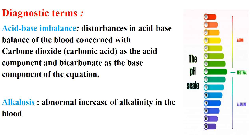Diagnostic terms: acid-base imbalance refers to a disturbance in the acid-base balance of the blood, concerned with carbon dioxide as the acid component and bicarbonate as the base component. The pH scale is used to measure this, and the neutral value is 7.